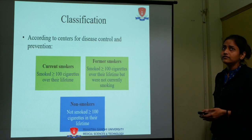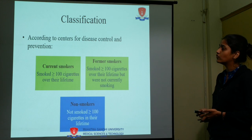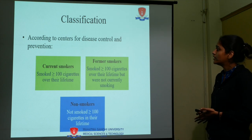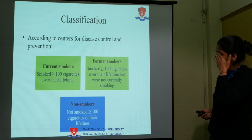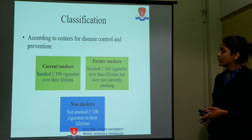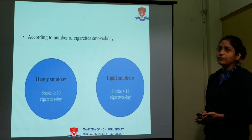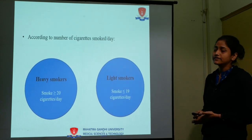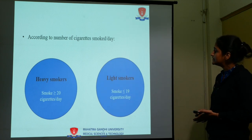According to the Centers for Disease Control and Prevention: current smokers have smoked more than or equal to 100 cigarettes over their lifetime. Former smokers have smoked more than or equal to 100 cigarettes over their lifetime but are not currently smoking. Non-smokers have not smoked more than or equal to 100 cigarettes in their lifetime. According to cigarettes smoked per day, heavy smokers smoke 20 or more per day and light smokers smoke 19 or fewer per day.